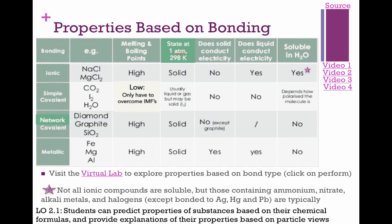Metallic bonding applies to metals like iron. We typically think of metallic bonding in terms of a sea of electrons. This slide also shows properties like melting and boiling points, normal state at standard conditions, whether the solid or liquid conducts, and solubility. There's a virtual lab you can visit to look at the different properties of each bonding type.